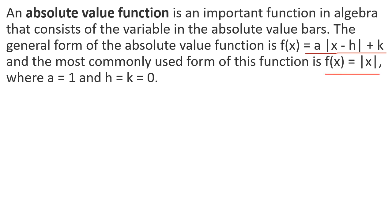The basic absolute value function is f of x equals mod x, where the value of h and k is zero. The general formula is a into mod of x minus h, plus k, where h and k are parameters that shift the graph.